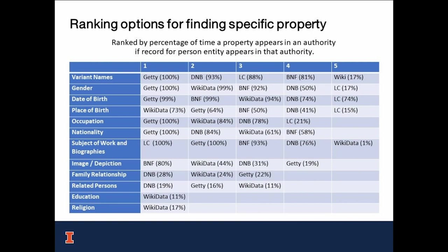This table could help us efficiently extract property values from the selected authorities. For example, for our corpus, all name entities appearing in Getty always have variant names. To get variant name information for a new entity, if we know the name has a Getty link, the chance of getting the variant name from Getty is higher than from other authorities. Overall, our research shows that the granularity and scope of selected authorities differ, and it is hard to obtain all types of information from one authority. This case study is an example of a metadata reconciliation process aiming to establish more complete and granular links to authority information, and to discover more consistent and normalized metadata for library collections. As our next step, we will continue to optimize the algorithm of extracting values from authorities and investigate ways to enhance the linked open data features of Implementica Online.